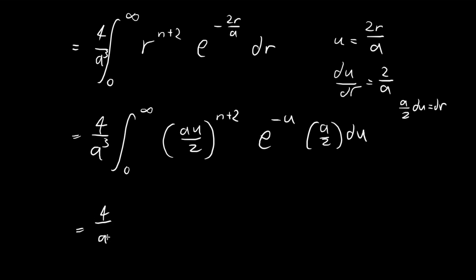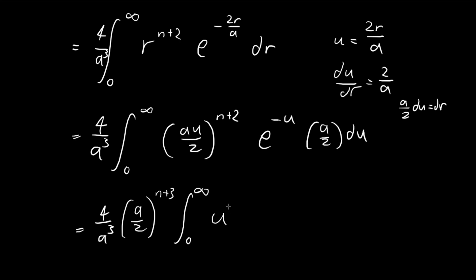We can pull out all the a/2 factors. There are n+2+1 = n+3 of them in total. Pulling them all out gives (a/2) to the power of n+3. We're left with the integral from 0 to infinity of u to the power of n+2 times e to the power of negative u, du.